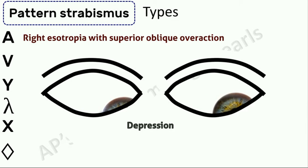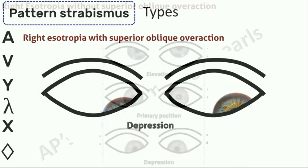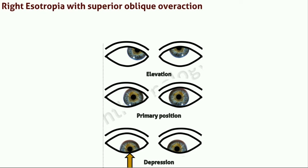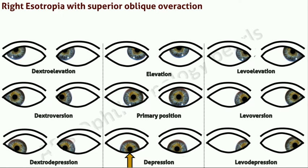In levodepression, which is the field of action of the right superior oblique, you can clearly see the superior oblique overaction, also termed over-depression in adduction. This would have been the position of the right eye without overaction. With overaction there is relative divergence producing an A pattern esotropia. You can also see the over-depression in adduction due to superior oblique overaction in levodepression.